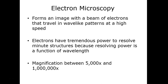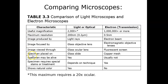Transitioning to electron microscopes: these achieve much higher levels of magnification — from about 5,000× to about 1,000,000× — compared to the light microscope's 40–2,000×. Instead of photons, they use a beam of electrons traveling in waves, providing high magnification and much greater resolving power due to shorter wavelengths. Table 3.3 in the textbook compares light and electron microscopes.